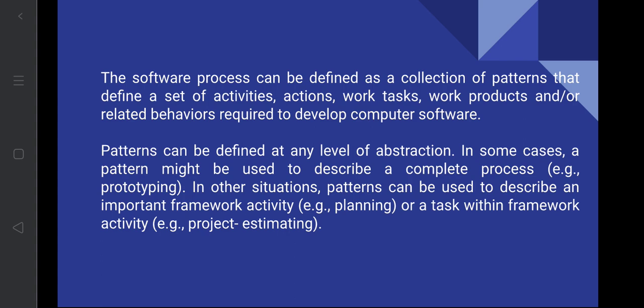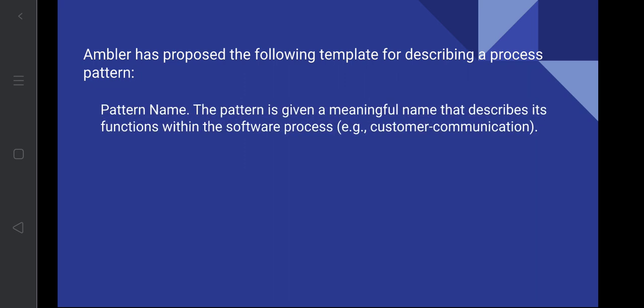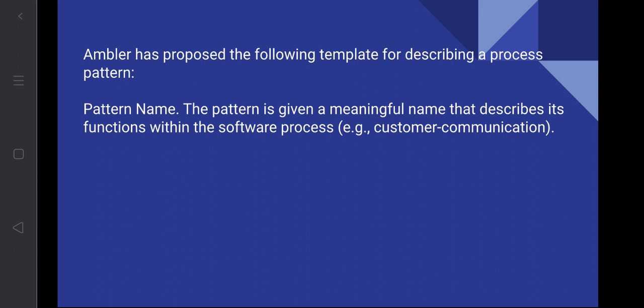Now let us look at how the template has been defined. Ambler proposed the following template for describing a process pattern. First, the pattern name should be given — a meaningful name that describes the function within the software process. For example, 'customer communication' is a pattern name that identifies the process of making communication with the customer, just like an identifier identifies a particular person or object.